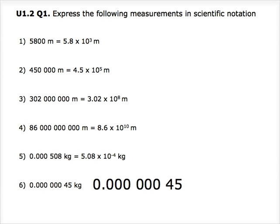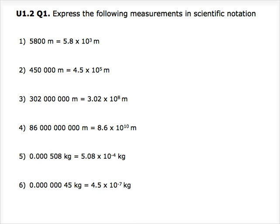Question 6: 0.000045 kilograms. We have to move the decimal point seven times to the right, giving us a final answer of 4.5 times 10 to the power of negative 7.